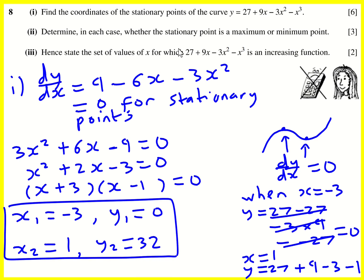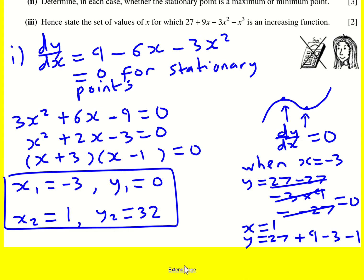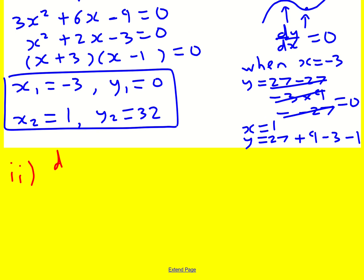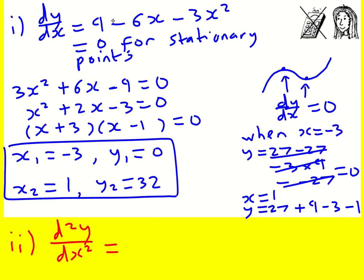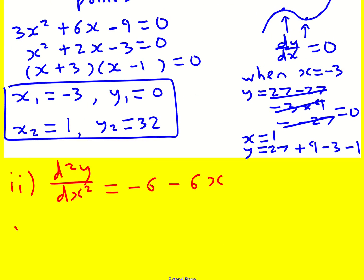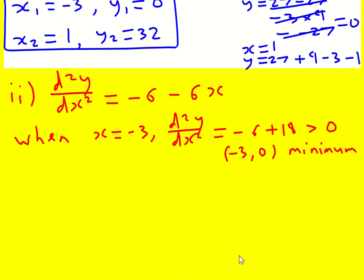We're now asked to show whether each stationary point is a maximum or minimum. So the go to is to find the second derivative. This one tends to be a little bit quicker if it works out. Second derivative. Now the 9 disappears. I'm going to get minus 6 minus 6x. So when x equals minus 3, I substitute this into the second derivative and I look at whether it's positive or negative. I'm going to get minus 6 plus 18. It's going to be greater than 0. And that means minus 3, 0 is a minimum. If it's greater than 0, it's a minimum. If it's less than 0, it's a maximum.